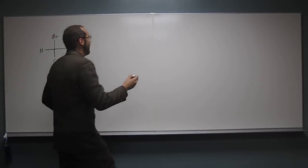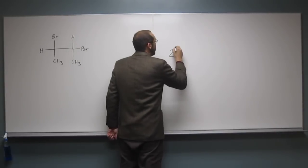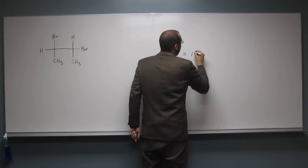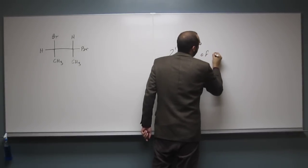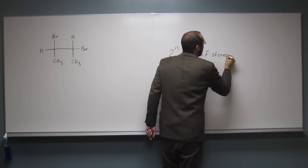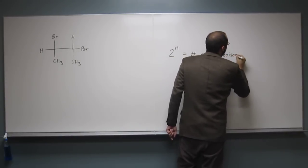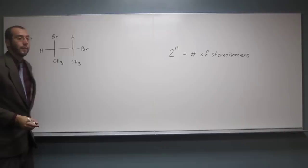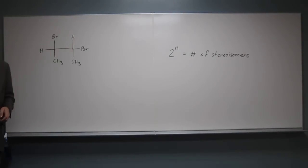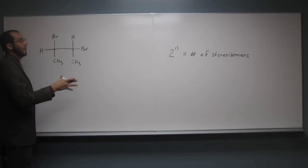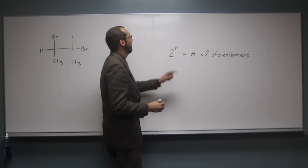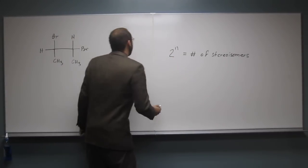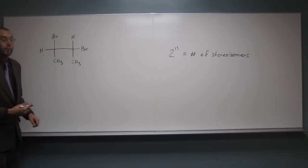Two to the n power. Two to the n power, right? So two to the n, that'll give us the number of stereoisomers in most instances. You got to watch out sometimes, okay? So let's look. Well, n here, what is that? That's the number of stereocenters, right?